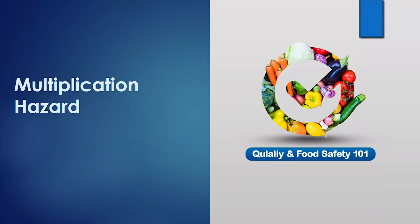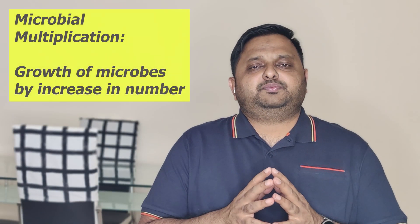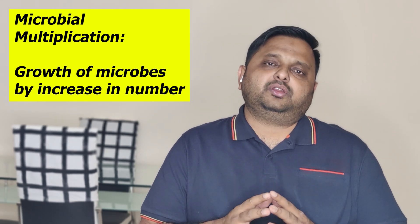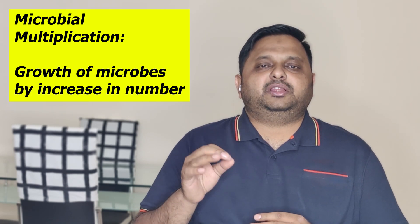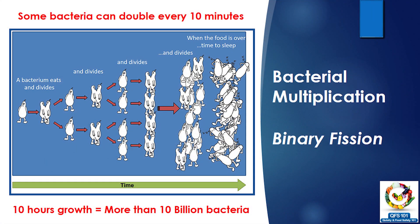Now let's go towards multiplication of microorganisms. As we discussed briefly in the second video, microorganisms do not grow in size — they grow in number, and that phenomenon is called binary fission, where one bacteria becomes two and two become four. Through this phenomenon, microorganisms increase their numbers, and as quickly as in 10 minutes one bacteria can double itself, and in 10 hours you can have as many as 10 billion microorganisms.